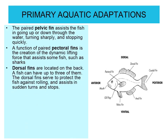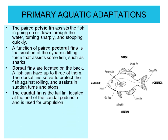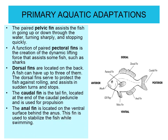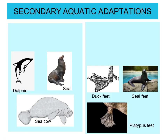The dorsal fins are located on the back; a fish can have up to three of them. The dorsal fin serves to protect the fish against rolling and assist in sudden turns and stops. The caudal fin is the tail fin located at the end of the caudal peduncle and is used for propulsion. The anal fin is located on the ventral surface behind the anus and is used to stabilize the fish while swimming.